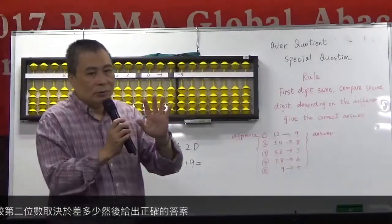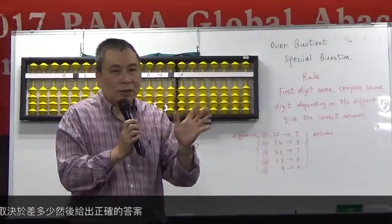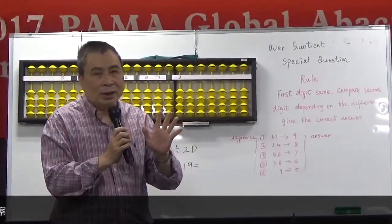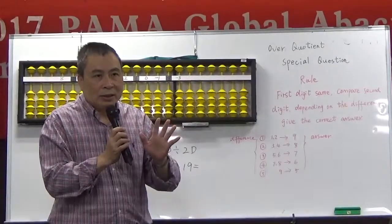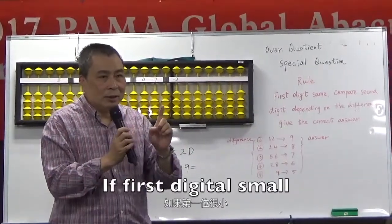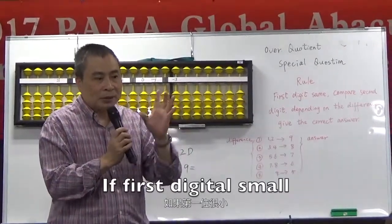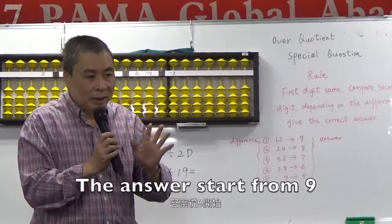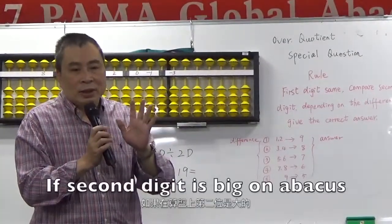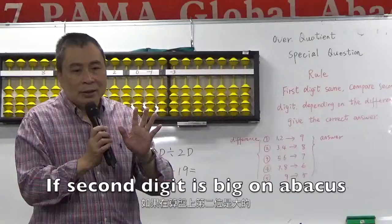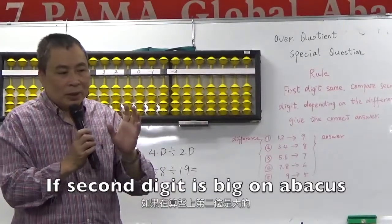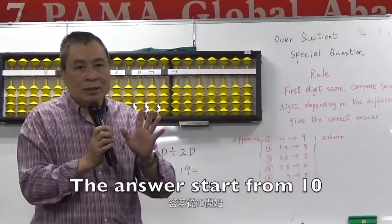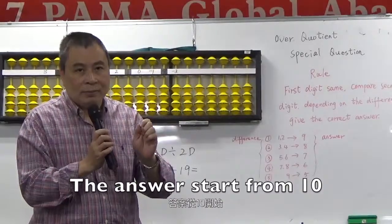The fourth is 1DG7. We need to compare the second digit. If 1DG is small, we answer star 9. If 2DG is bigger, we answer star 10.